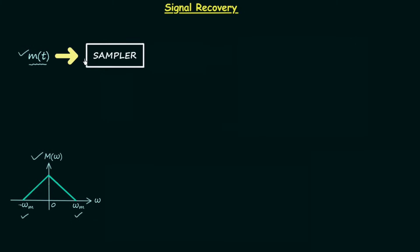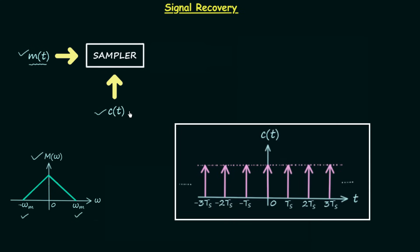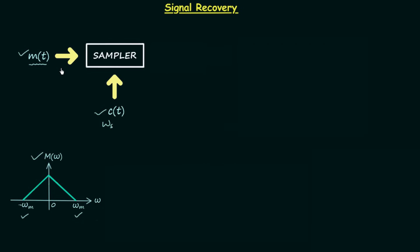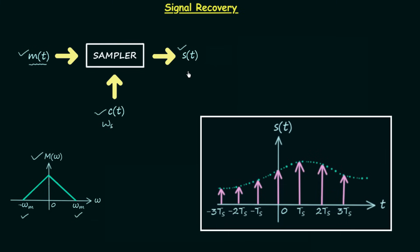We feed this message signal to a device known as a sampler, and along with the message signal we feed one more continuous time signal CT. CT is a periodic impulse train whose waveform you can see on your screen, and the fundamental angular frequency of this periodic impulse train is ωs, known as the sampling frequency. Once we feed MT and CT to the sampler, this device multiplies MT and CT and gives us another continuous time signal ST, known as the sampled signal, whose waveform you can also see on screen.